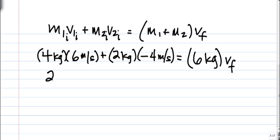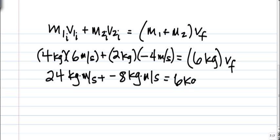Okay, so four times six is going to give us 24 kilogram meters per second, plus two times negative four is negative eight kilograms meters per second, equals six kilograms times some sort of velocity we're not sure what that is yet. So 24 minus eight is 16, so I'm going to have here 16 kilogram meters per second equals six kilograms times some velocity.